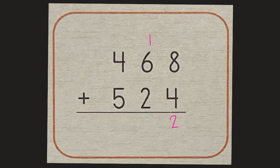Now we're ready to add the tens column. So we're going to add these digits together. Don't forget to add the one that you carried. So six plus one is seven plus two more is nine. We write that total down in the answer space. Finally, we're going to move over to the hundreds column. Four plus five is equal to nine and we're going to put that in the answer space. So now we know that 468 plus 524 equals 992.